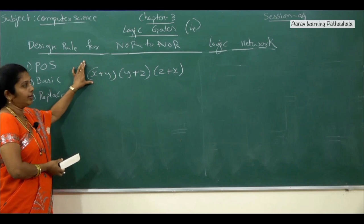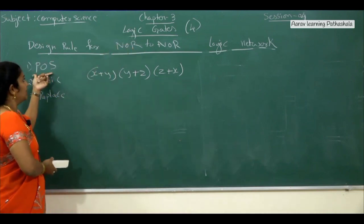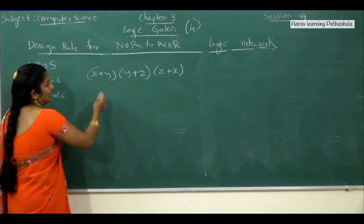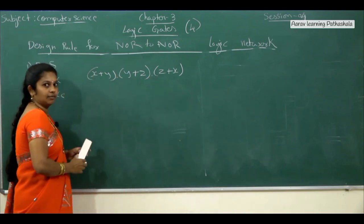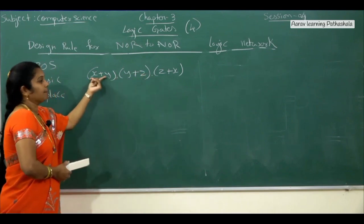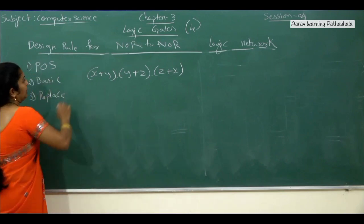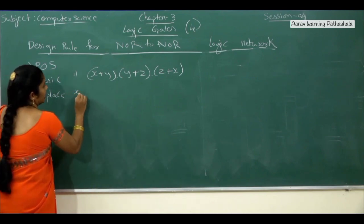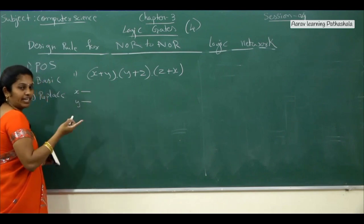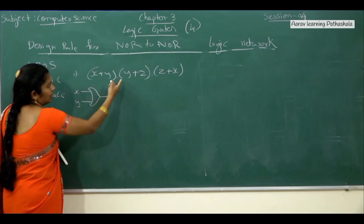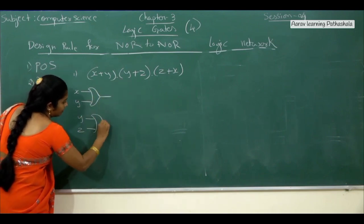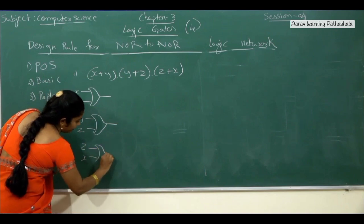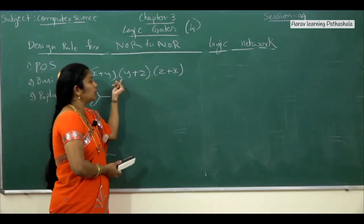Consider the example expression: (X + Y)(Y + Z)(Z + X). The first step is to check whether the given expression is in product of sum format. Here we have no dot operator at the top level — we have a product of sum expressions, so it is satisfied. The second step is to write the circuit diagram using basic gates. Take X and Y with a plus operator — reverse C-shape — the OR gate. Then Y and Z with an OR gate, and then Z and X with an OR gate.